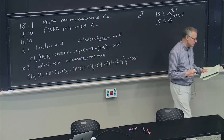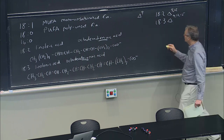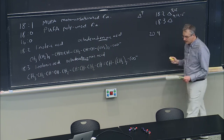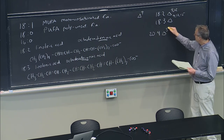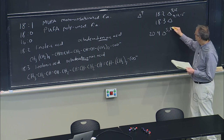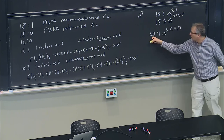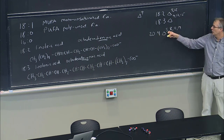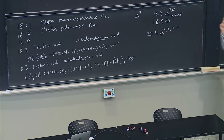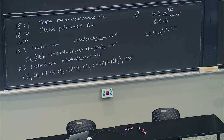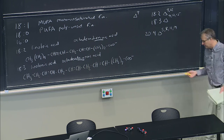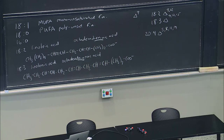A classic example of an exception is arachidonic acid, a 20-carbon fatty acid with four double bonds at carbons 5, 8, 11, and 14. You may have heard of arachidonic acid — it's a key signaling fatty acid that's mobilized to generate inflammatory mediators. The enzyme that acts on it to generate those mediators is the target of very common drugs like aspirin and other nonsteroidal anti-inflammatory drugs such as ibuprofen.